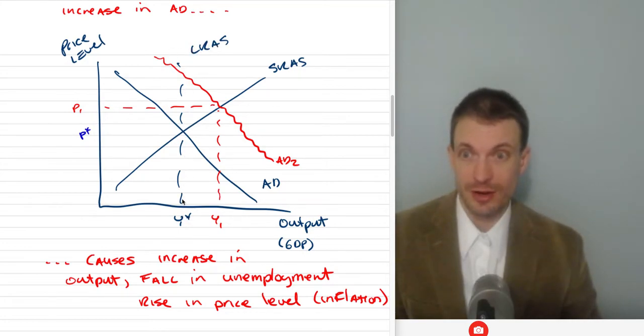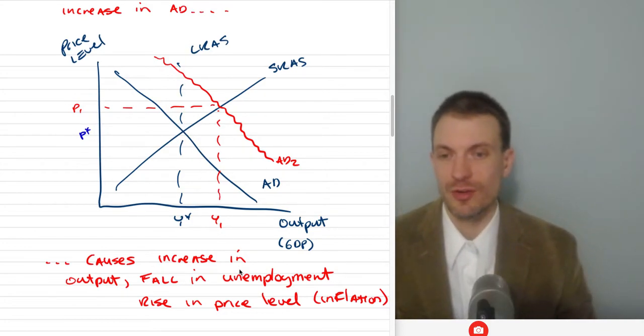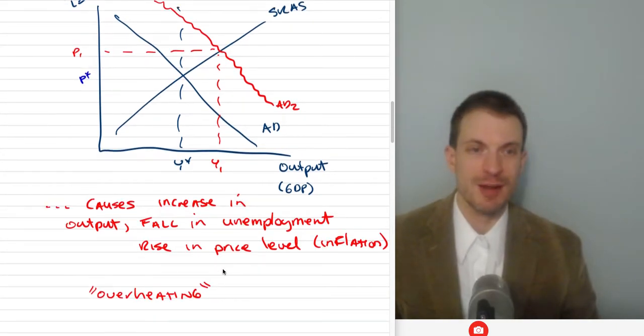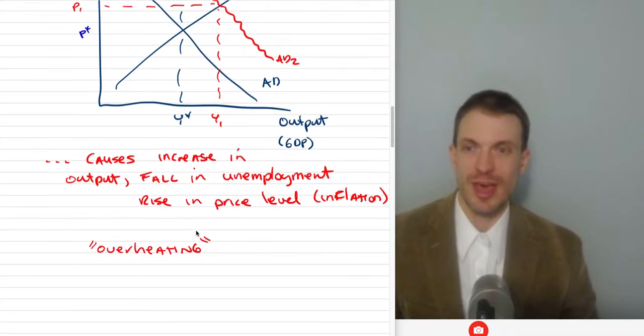This would be called an expansionary or inflationary gap because this is much larger than the full employment equilibrium. This is the long run aggregate supply curve, which tells us the natural state of the economy. We get a rise in the price level, that's inflation. The economy is overheating. The policy prescription would be maybe the central bank raises interest rates or the government reduces spending or raises taxes.